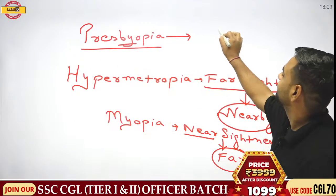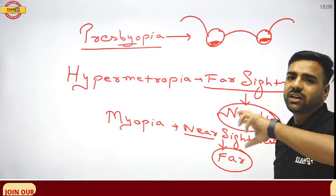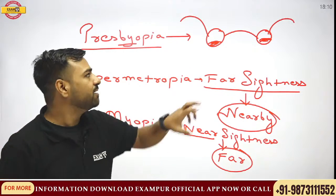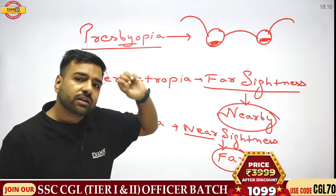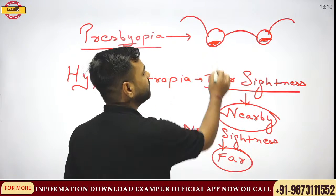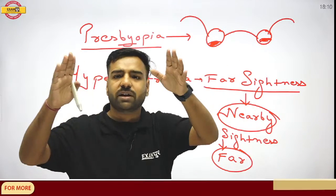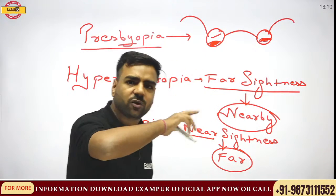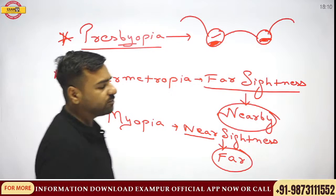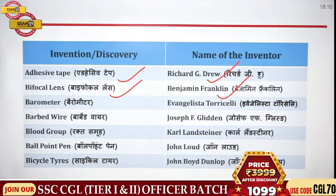Bifocal lenses are used for presbyopia. These are three important points from the human eye section. Bifocal lenses were actually discovered by Benjamin Franklin.